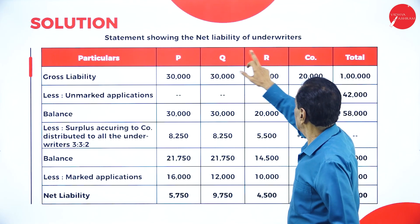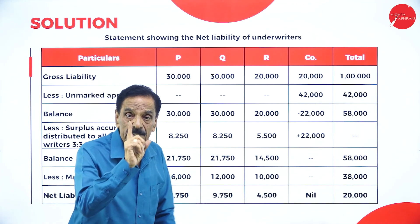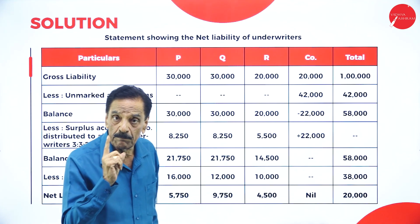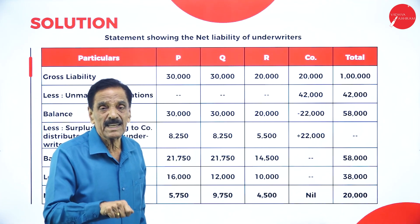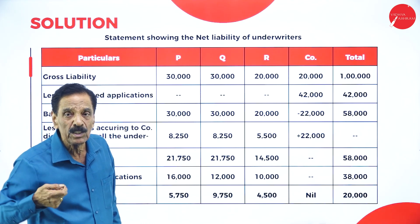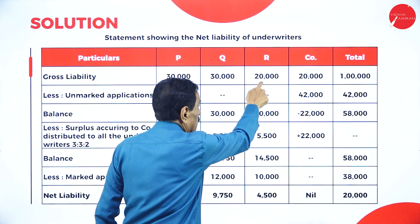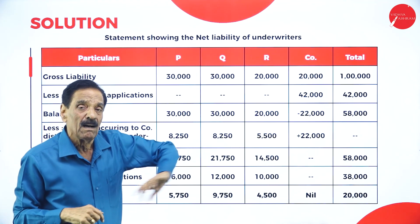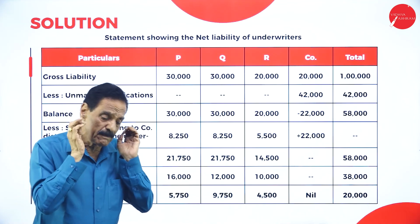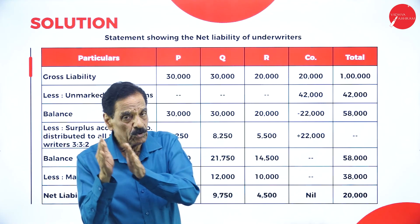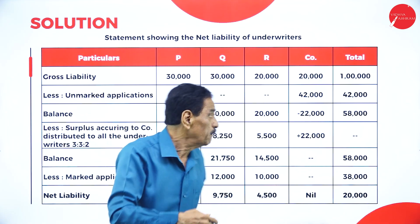Statement showing the net liability of underwriters. Gross liabilities: 30,000 shares accepted by P, 30,000 accepted by Q, 20,000 accepted by R — totalling 80,000. The total number of shares issued is 1 lakh, so the remaining 20,000 shares are the responsibility of the company directly. So underwriter P takes 30,000, Q takes 30,000, R takes 20,000, and the company takes responsibility for selling 20,000 shares to the public, making the total 1 lakh.